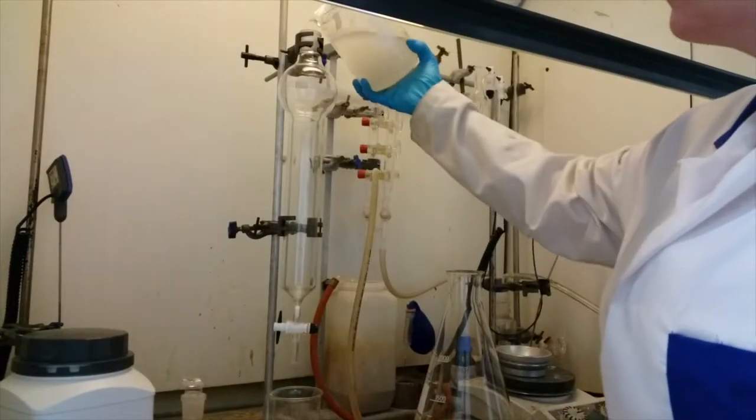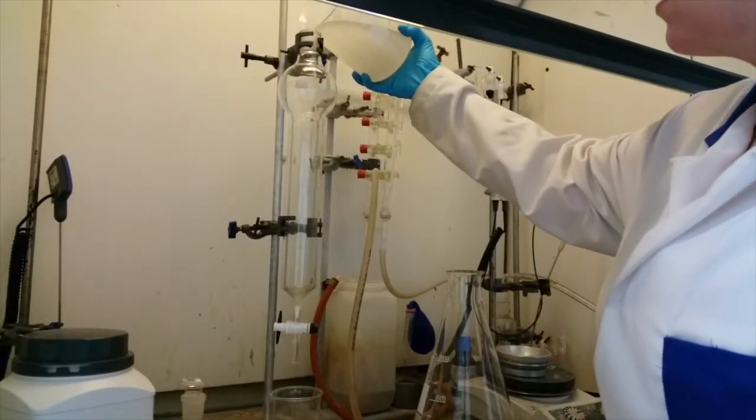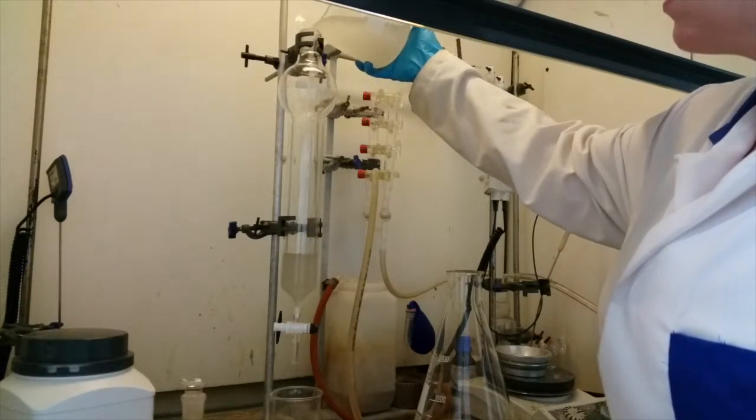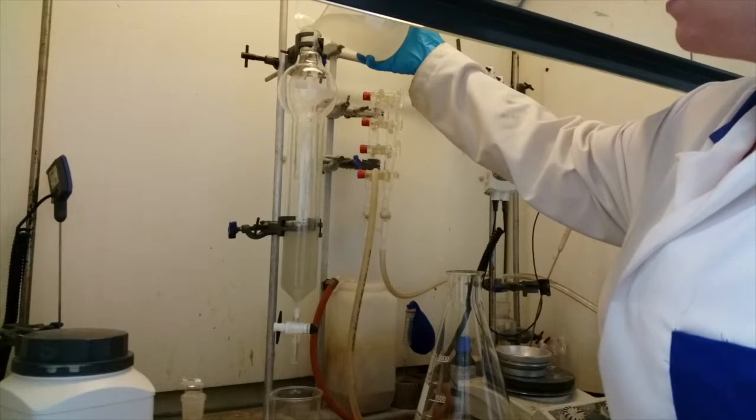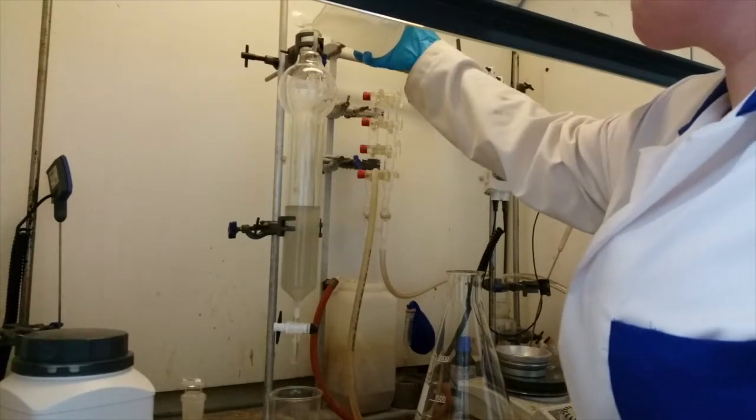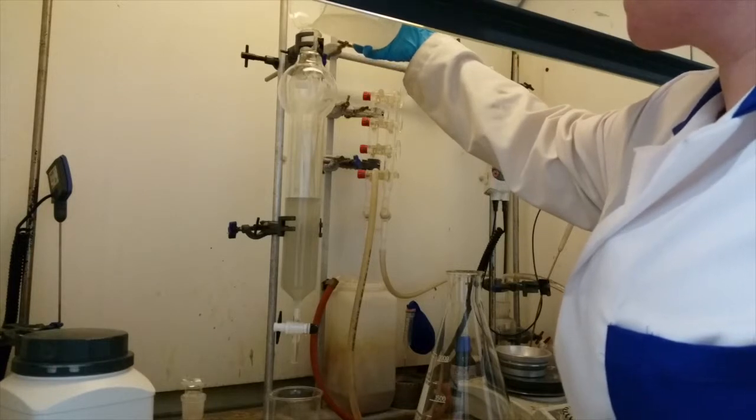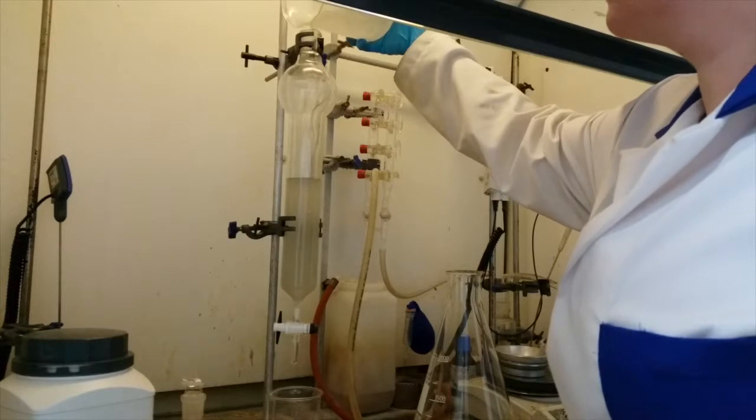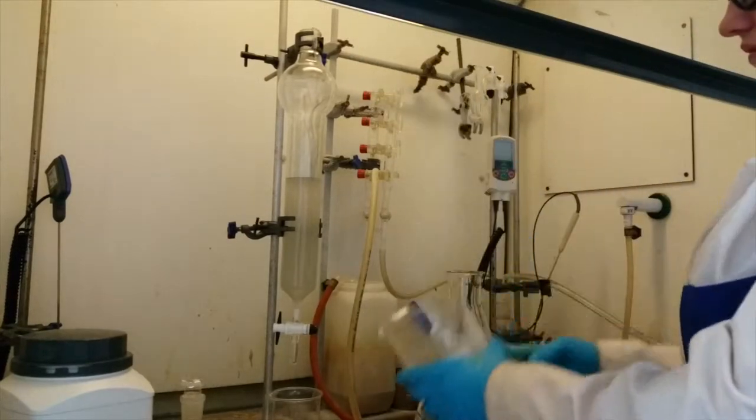Carefully pour your silica slurry into your column using a powder funnel if you're worried about spilling it. The silica will settle a lot during packing so don't worry if at this point the slurry fills more of the column than you expected it to. Often the slurry gets thicker and more difficult to pour towards the end of the beaker. In order to prevent this you can add a little more solvent as you go along to make it easier to pour.